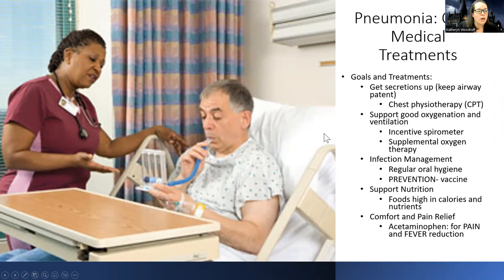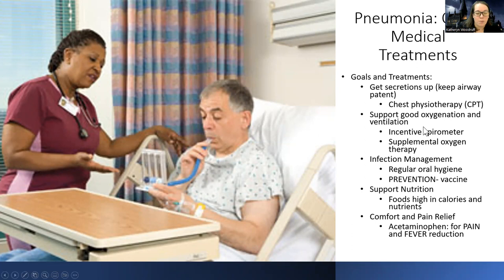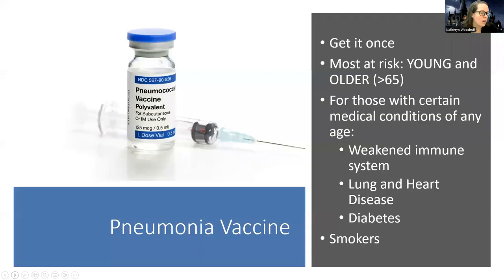Other medical treatments and overall goals: get secretions up — we may do things like CPT (chest physiotherapy) to agitate and get secretions moving. Support good oxygenation and ventilation using the incentive spirometer — exhale first, then take a big deep breath in. They may need supplemental oxygen since this is an oxygen problem. Maintain good oral hygiene to keep bacteria out of the mouth and reduce what goes to the lungs. Prevent pneumonia with the vaccine. Give foods high in calories and nutrients to address nutritional deficits. Give acetaminophen for pain and fever reduction.